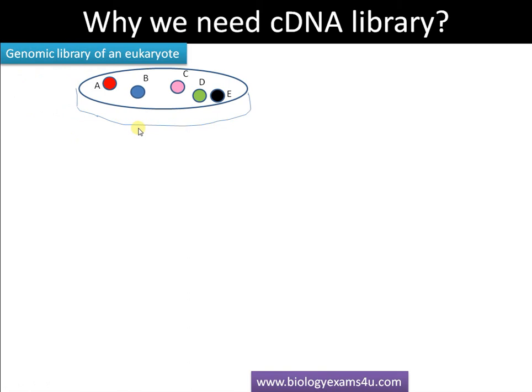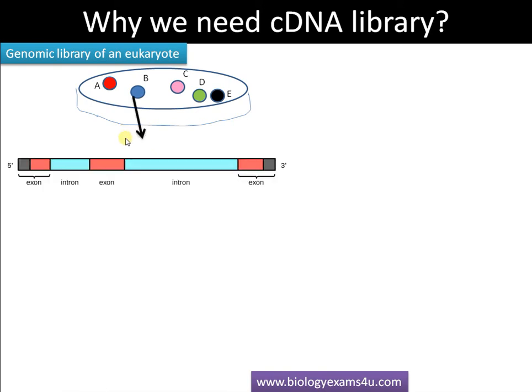A genomic library is simply a set of clones containing a specific DNA fragment that is maintained as bacterial colonies. The labels A, B, C, D, E represent different gene fragments maintained in bacterial colonies — this collection is called a genomic library.